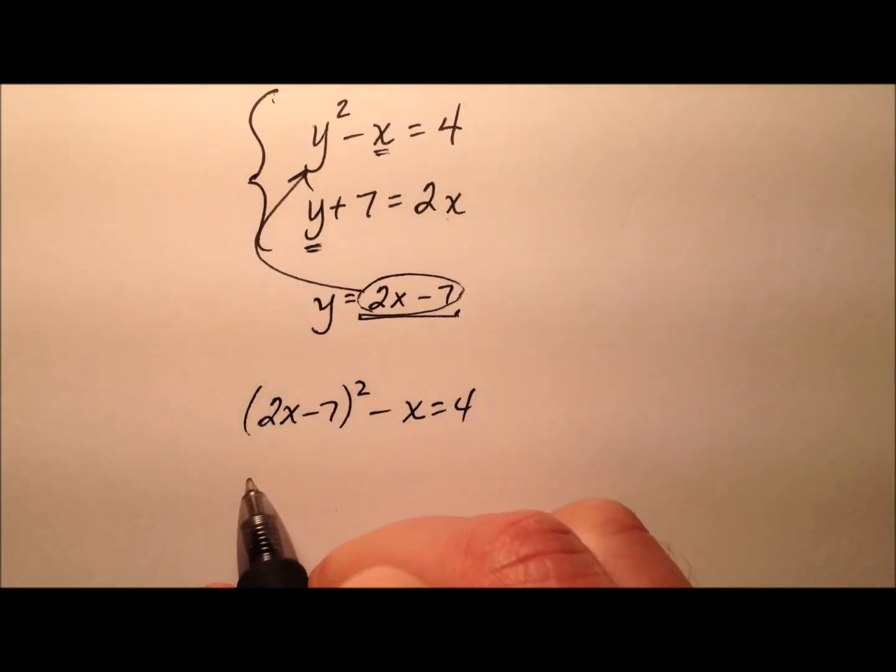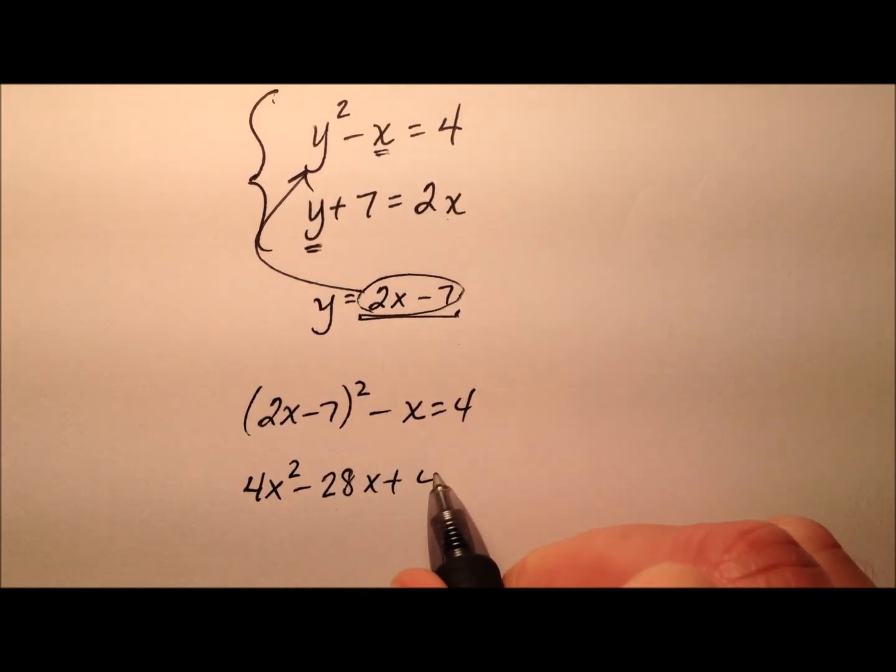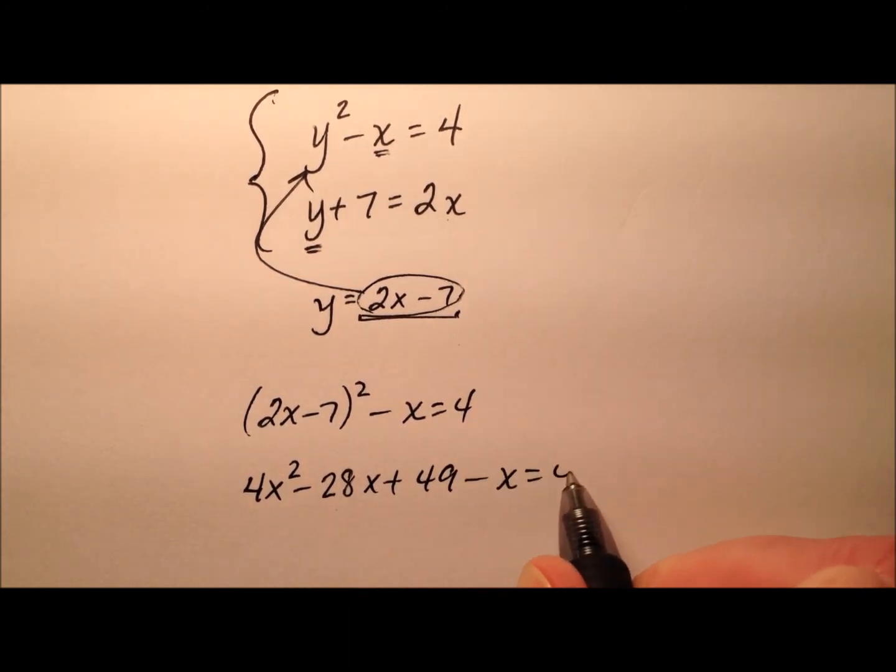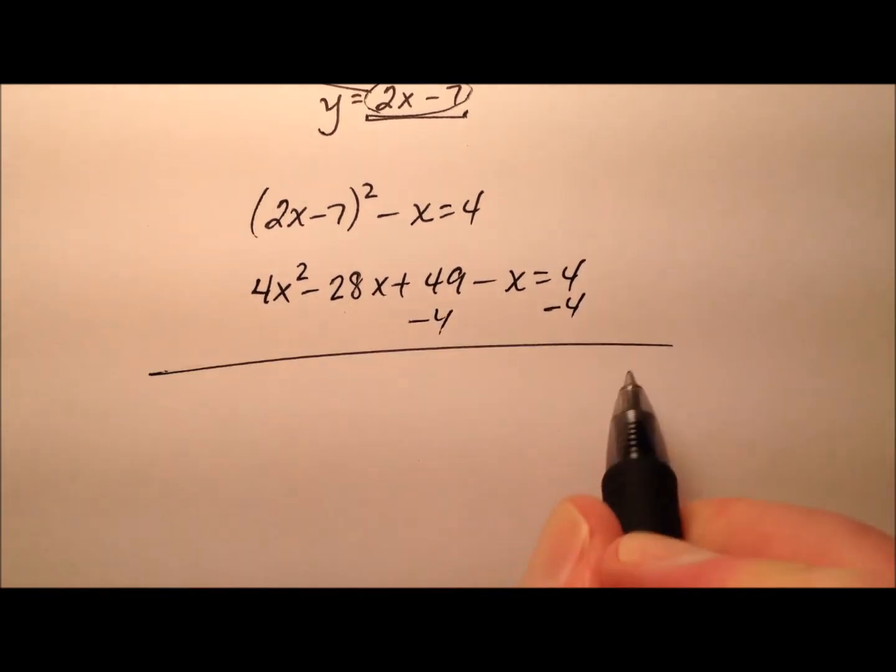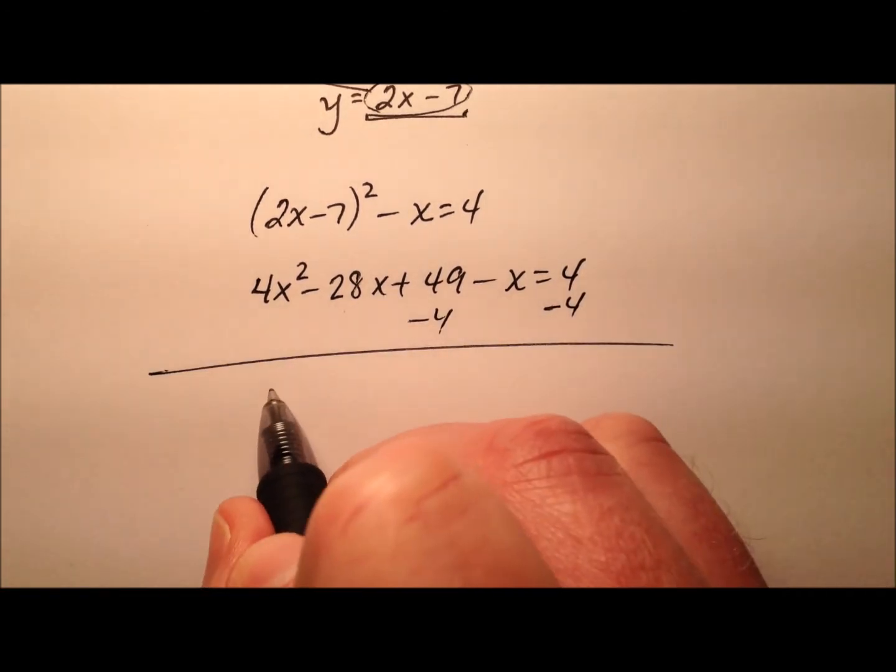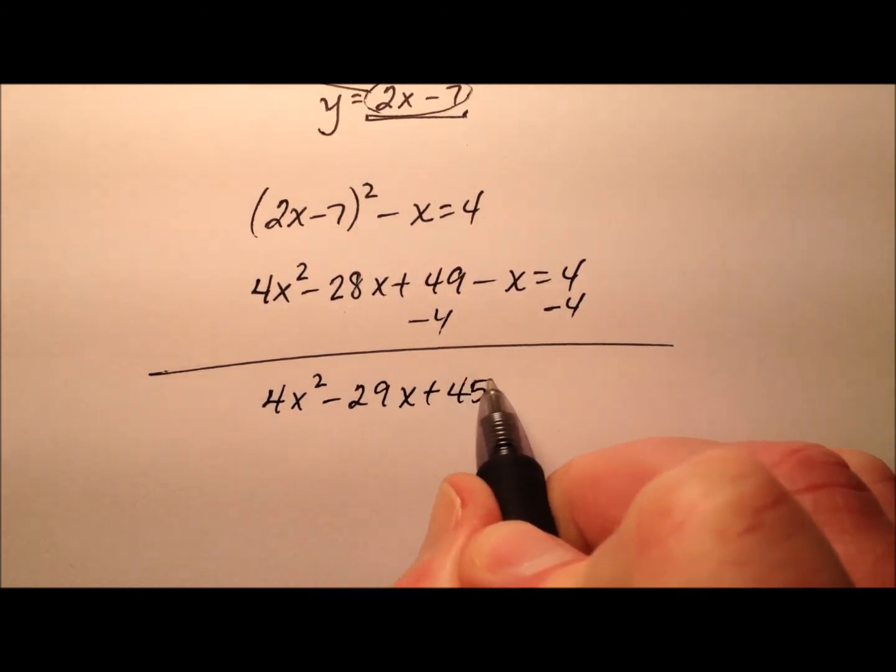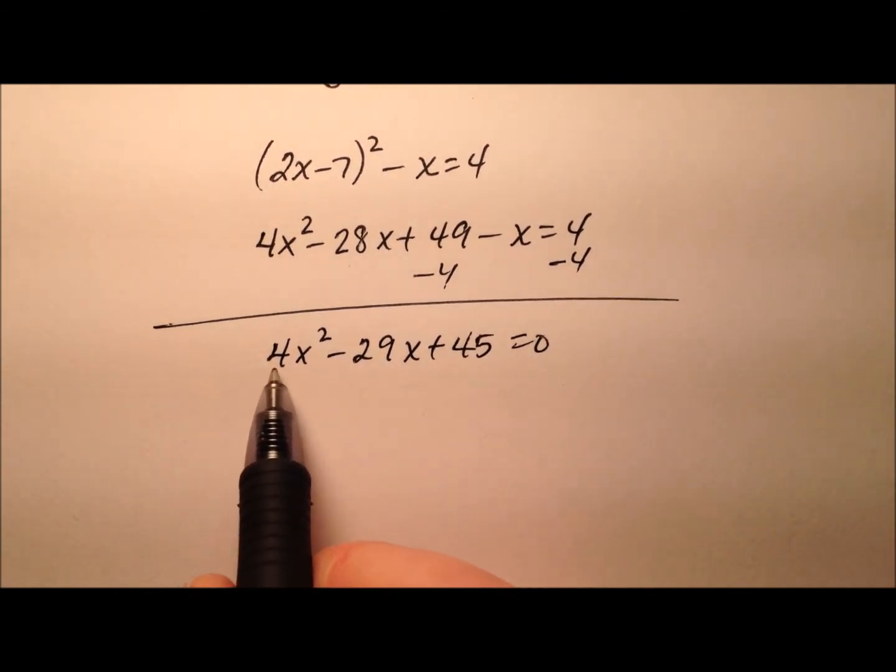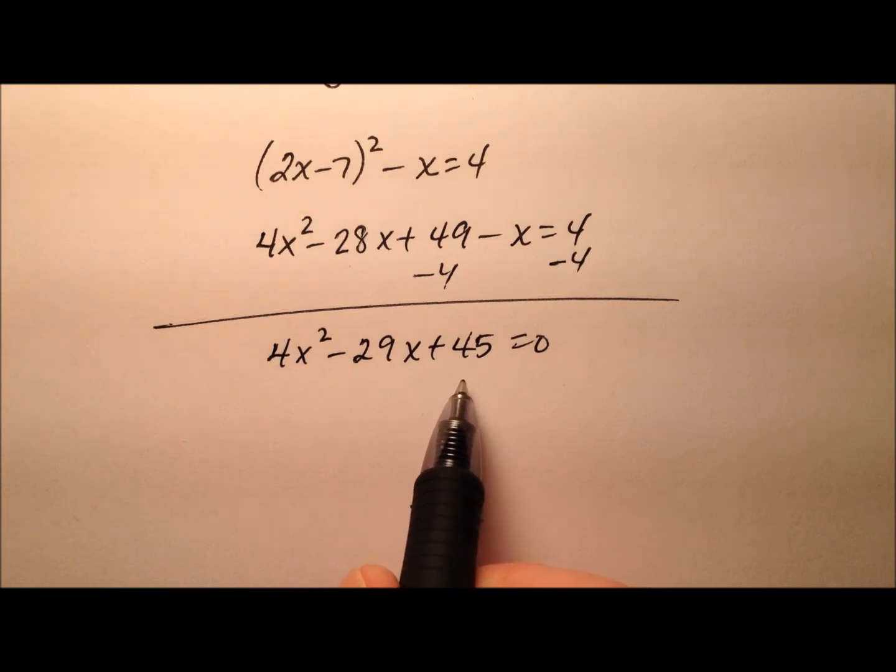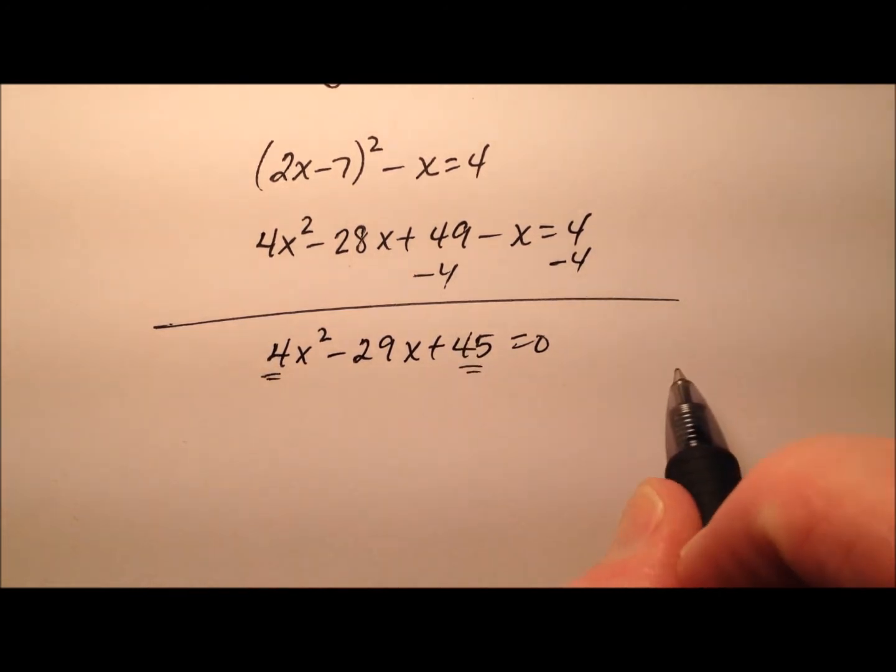So when I square this I'll end up with 4x squared minus 28x plus 49 and then minus x equals 4. So this is quadratic in nature so it looks like I just need to set it equal to zero and factor if possible. So 4x squared minus 29x plus 45 equals zero. So looks like there's not a greatest common factor I can pull out of everything. So I'm going to do the AC method.